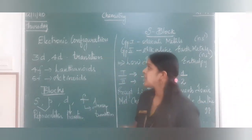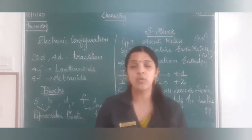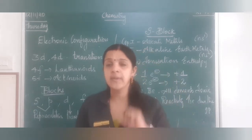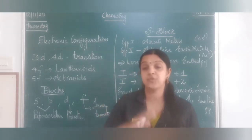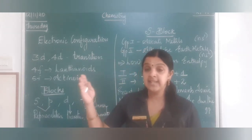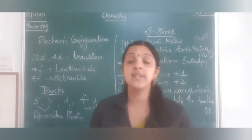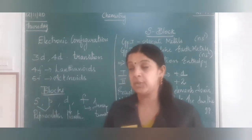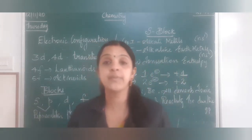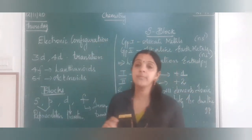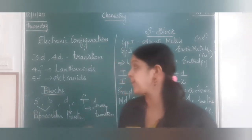Before getting into electronic configuration — in 10th standard we started learning that we have 4 main shells: K, L, M, N (the principal shells). Each shell has subshells: S, P, D, and F. Each subshell has orbitals and each orbital can hold electrons. We were learning how to write electronic configuration according to the Aufbau principle, Pauli exclusion principle, and Hund's rule of maximum multiplicity.